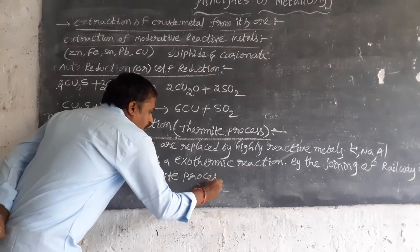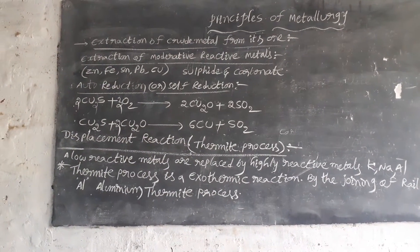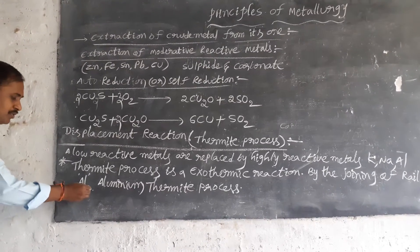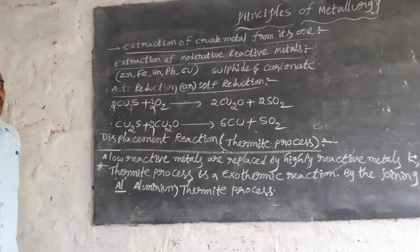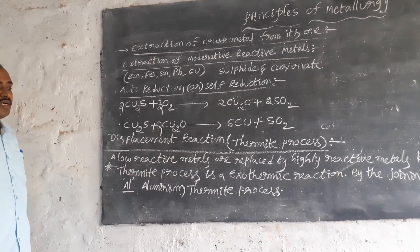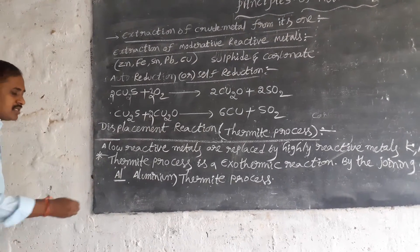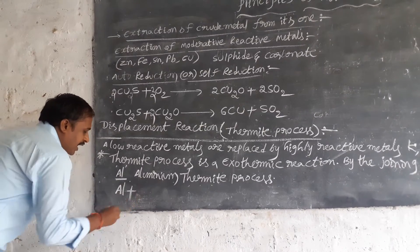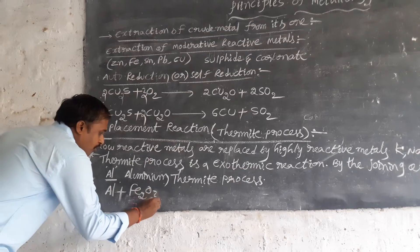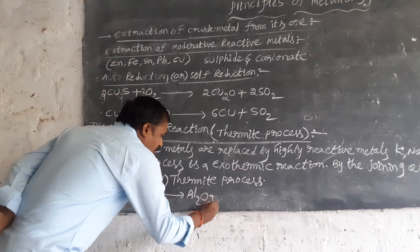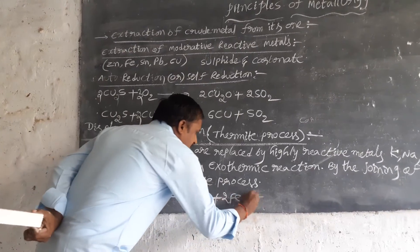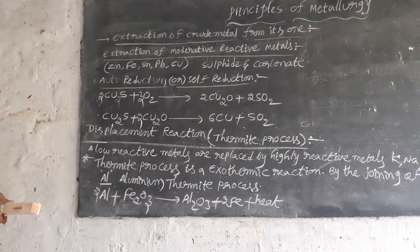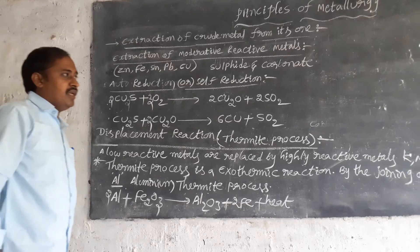The aluminium thermite process is used for joining railway tracks. Now we can observe examples: 2 Al plus Fe2O3 gives Al2O3 plus 2 Fe plus heat. That is the first example.